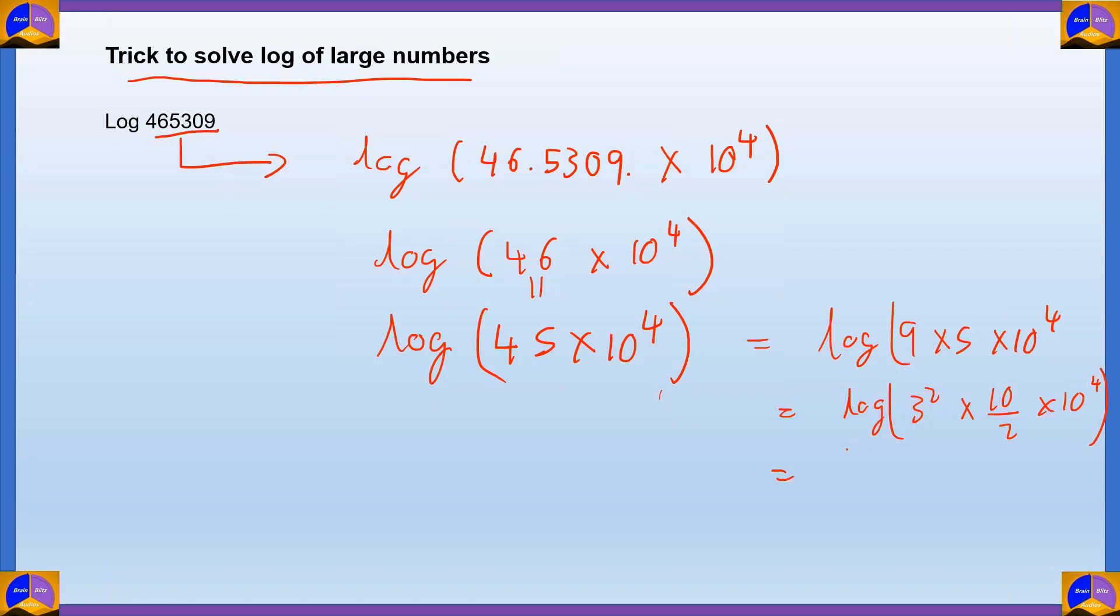So next thing that we do, now since we have log A into B, we can write that as log A plus log B. And in case if you're wondering how I got those rules, then you have to stay till the end of the video. I'll show you all of the rules of logarithms. So back to our problem. Let's write it as log 3 squared plus log 10 by 2 plus log 10 raised to 4.